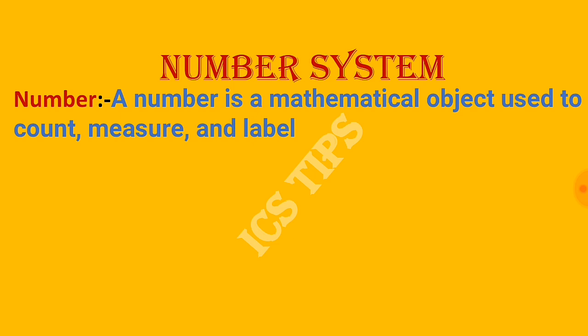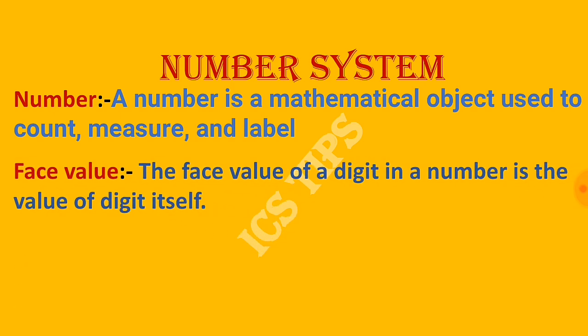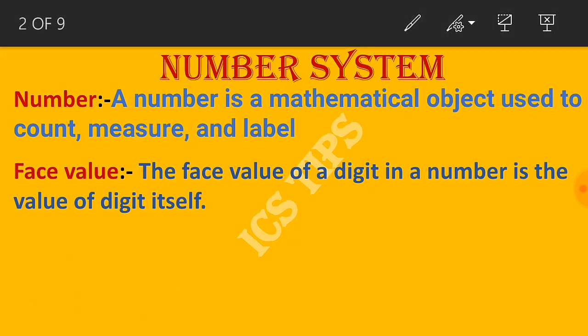There are two types of values for numbers: face value and place value. The face value of a digit in a number is the value of the digit itself.